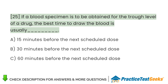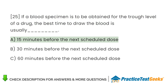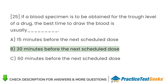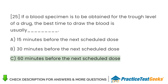If a blood specimen is to be obtained for the trough level of a drug, the best time to draw the blood is usually A. 15 minutes before the next scheduled dose. B. 30 minutes before the next scheduled dose. C. 60 minutes before the next scheduled dose.